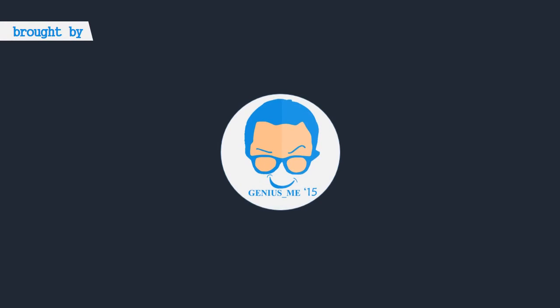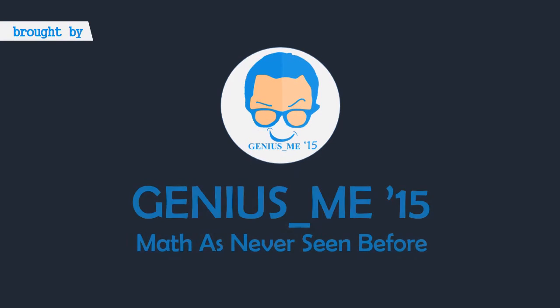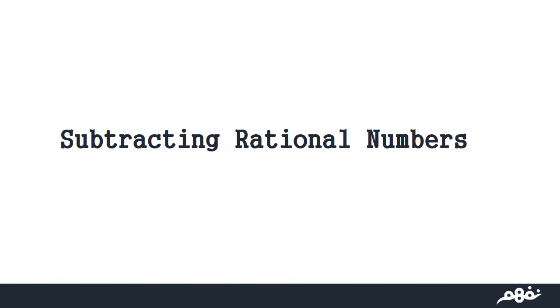Hello my colleagues, and this is a new math lesson: subtracting rational numbers. So how can a number be a rational one?